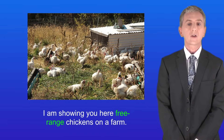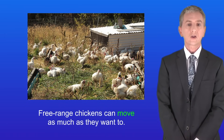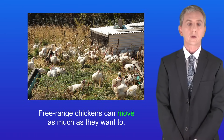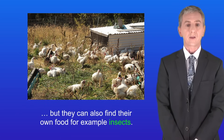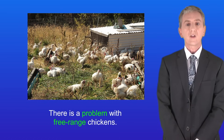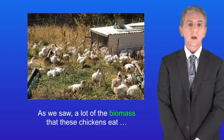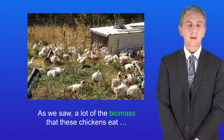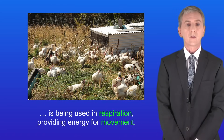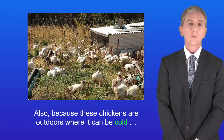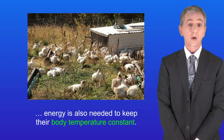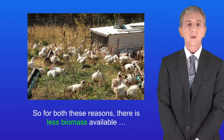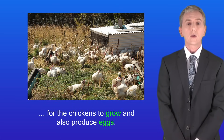I'm showing you here free-range chickens on a farm. Free-range chickens can move as much as they want to. They are provided with food but they can also find their own food, for example insects. There is a problem with free-range chickens: a lot of the biomass they eat is used in respiration, providing energy for movement. Also, because these chickens are outdoors where it can be cold, energy is also needed to keep their body temperature constant.